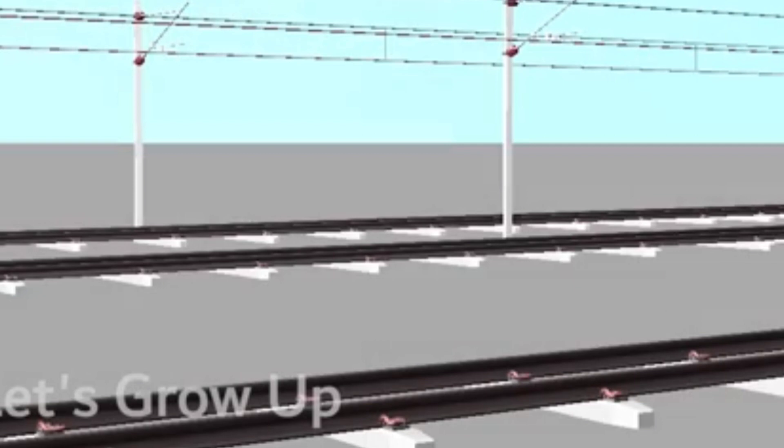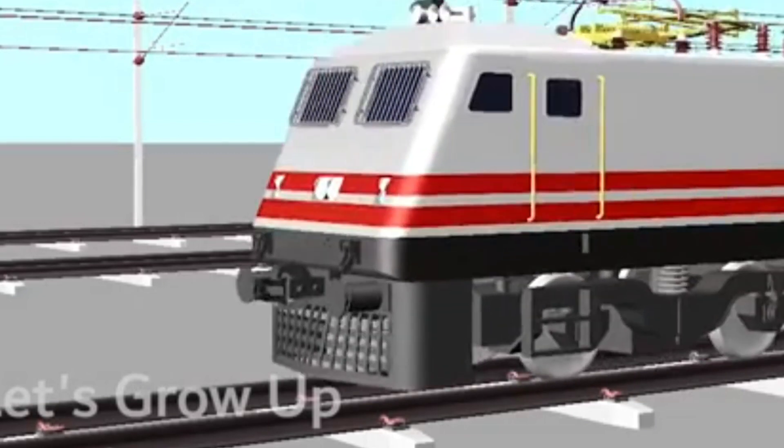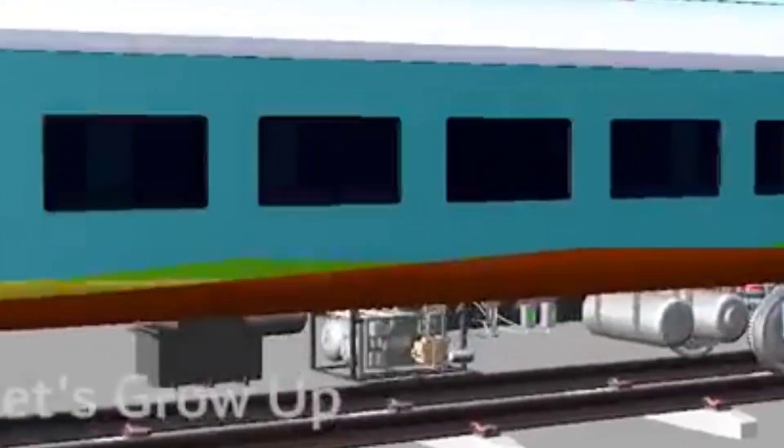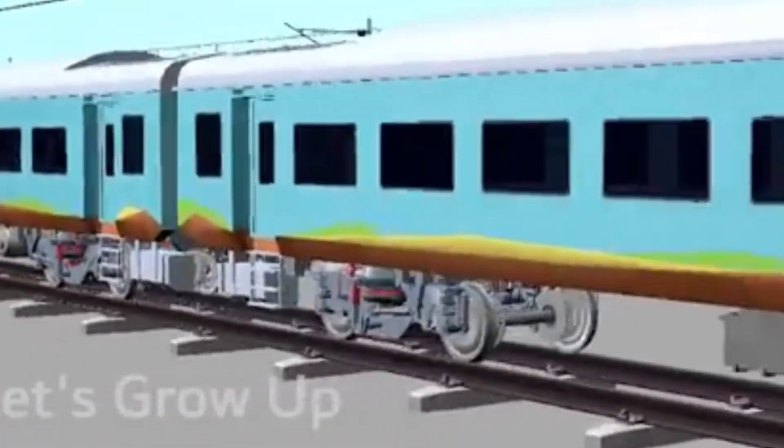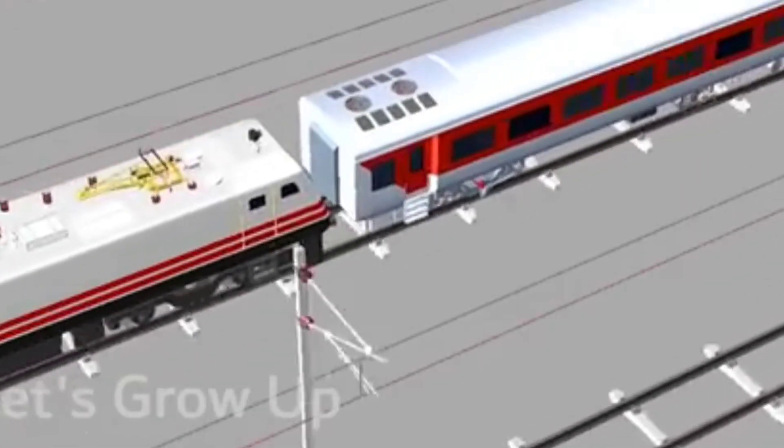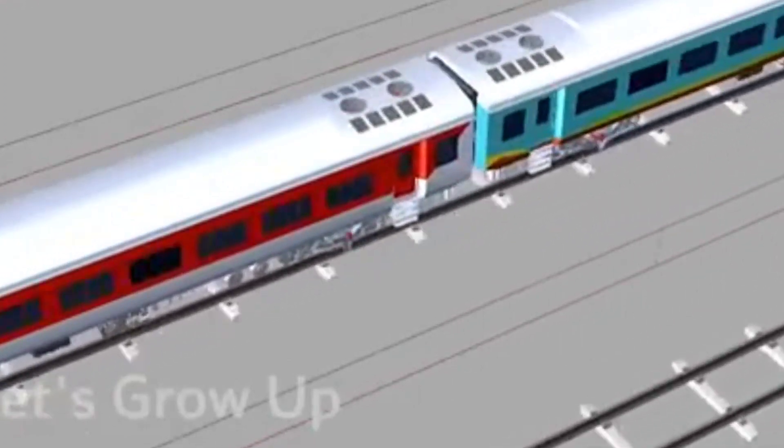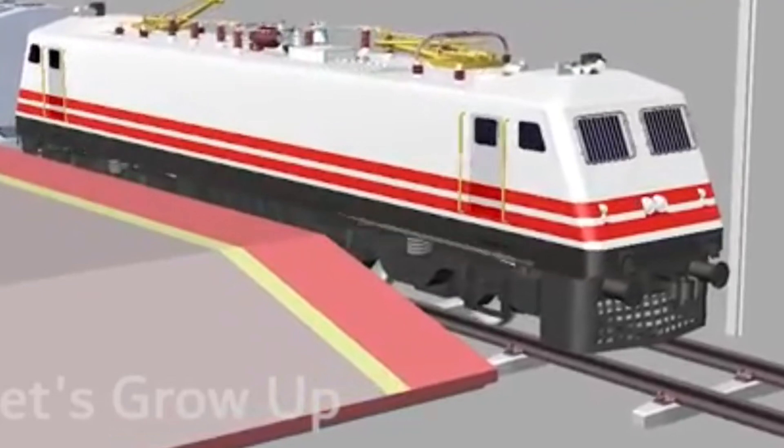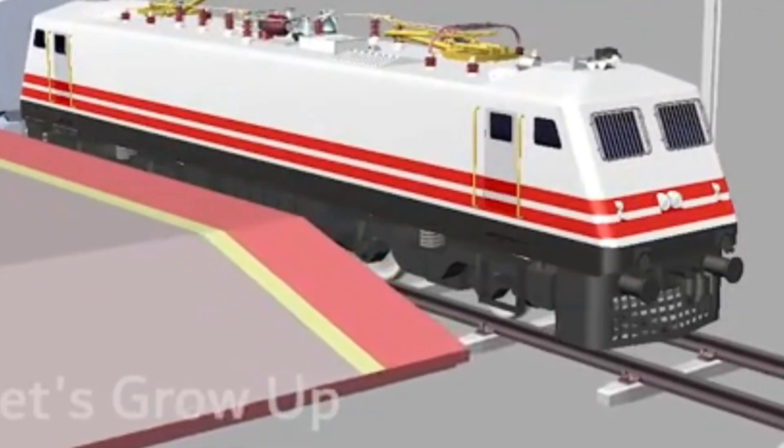On the other side, Bangalore Howrah Superfast Express is coming. This is Bangalore Howrah Yasubantpur Express. Coromandel Express is leaving the Balasor Railway Station.